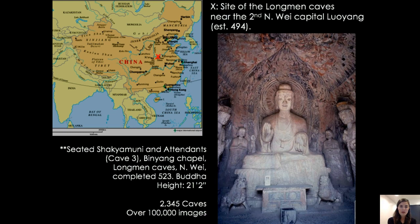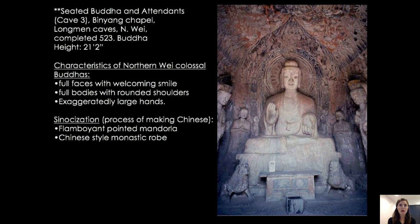Moving from the Yungang caves to the Longmen caves — in this cave we can see not only sculpture but also painting. We can see the historic Buddha with attendants in a particular chapel, a fairly large representation of 21 feet tall, dating to 523. Talking about the characteristics of the Northern Wei Buddha, we see full faces with a welcoming smile, full bodies, rounded shoulders similar to those in the Mathura style, exaggerated large hands. Then in the Sinicization of the Buddha — making the Buddha more Chinese — we see a more flamboyant pointed mandorla, a kind of super halo in the background. The monastic robes are identified as more Chinese, so the garments become more local as well.